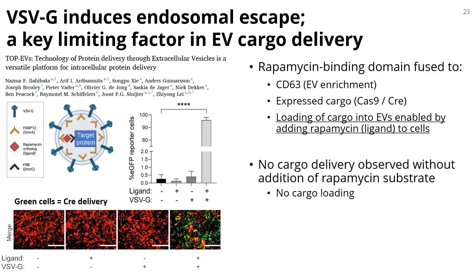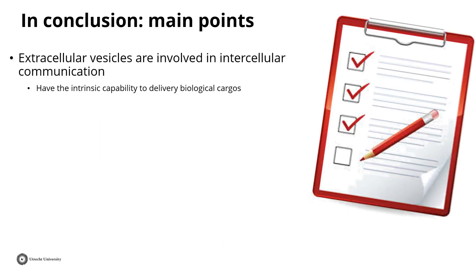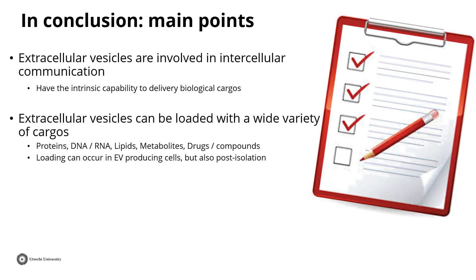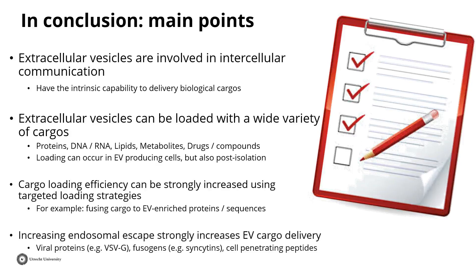This has been shown in multiple studies for multiple types of molecules: messenger RNA, Cas9, and fluorescent proteins — so you're starting to read more and more about this. My take-home messages are that EVs' intrinsic capability for cargo delivery allows you to deliver a wide variety of compounds in many different ways. Really understanding the basic biogenesis processes you can hijack to load your cargo is key, and being aware that increasing endosomal escape strongly enhances delivery of your cargo. Thank you all for your attention.